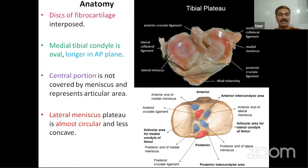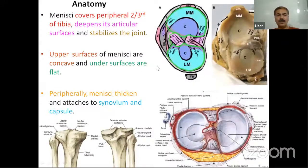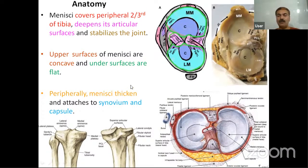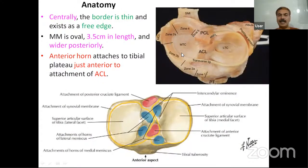The menisci are discs of fibrocartilage interposed between the femoral condyle and the tibial plateau. The medial tibial plateau is longer in the posterior plane compared to the lateral tibial plateau. The central portion represents the articular area. The lateral meniscus plateau is almost circular and less concave, whereas the medial one is concave. The menisci cover around two-thirds — the peripheral two-thirds — of the tibia. They deepen the articular surfaces. The upper surfaces are concave and the under surfaces are flat. Peripherally the menisci thicken and attach to the synovium and capsule. Centrally, the border is thin and exists as a free edge.